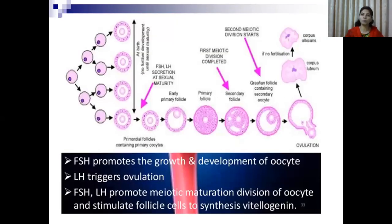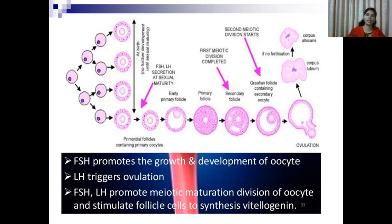The whole process of oogenesis is under hormonal control. Follicle stimulating hormone (FSH) promotes the growth and development of the oocytes. LH triggers the ovulation process. Both FSH and LH promote the meiotic maturation division of the oocytes and also stimulate the follicle cells to synthesize vitellogenin.